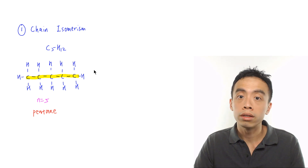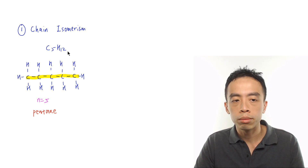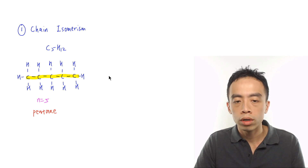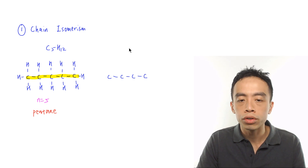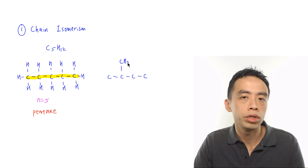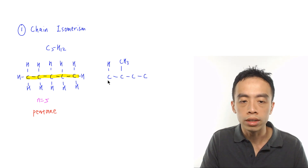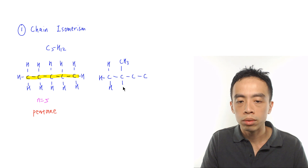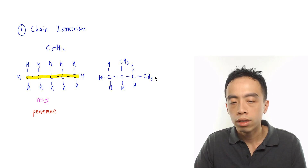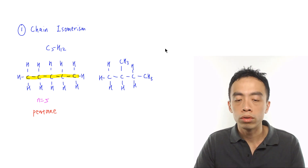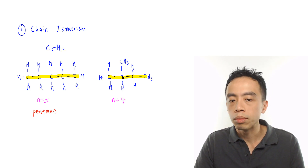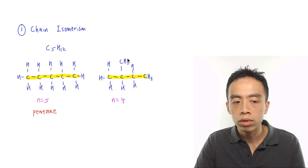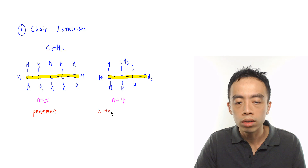Another chain isomer with molecular formula C5H12 has the longest possible carbon chain of n = 4, with a methyl group attached to carbon number 2. Filling in the hydrogens gives CH3 at each end, CH2 in the middle, and one hydrogen on carbon 2. This is also C5H12, but the longest carbon chain is n = 4 with a methyl branch at carbon 2, so the name for this compound is 2-methylbutane.